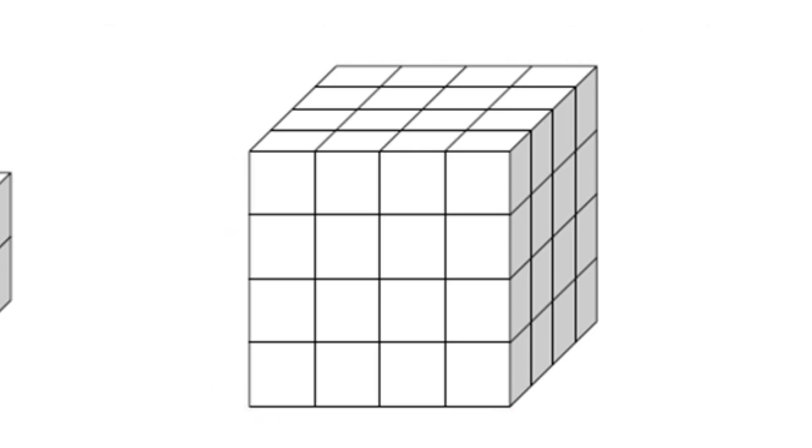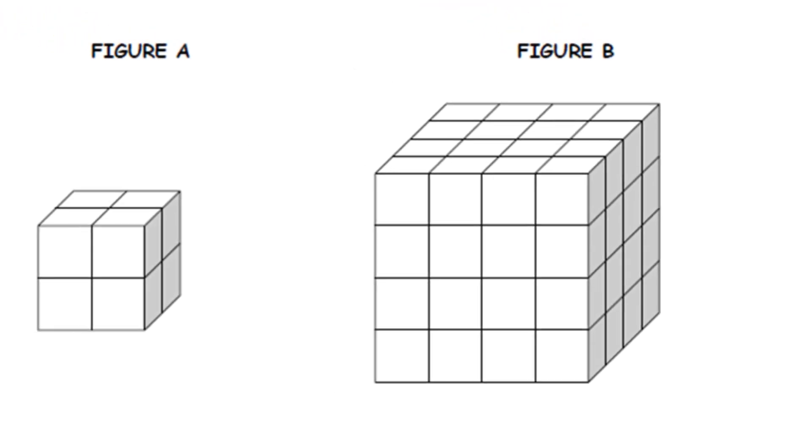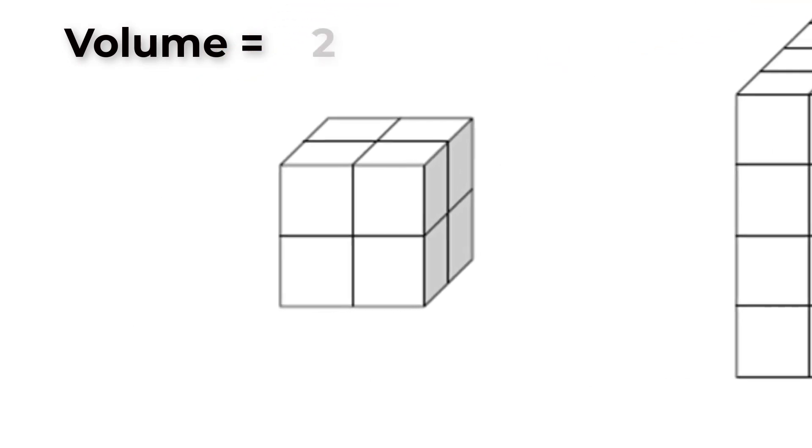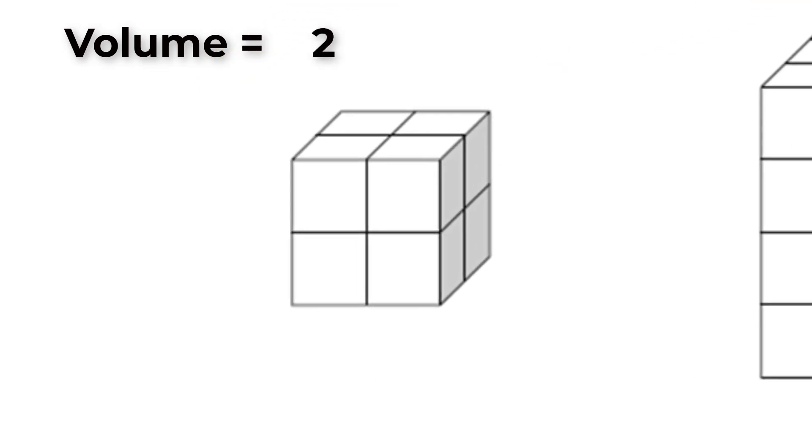Let's compare these values. When we formulate the volume of these cubes, for Figure A, the volume of a cube is calculated by multiplying the height, which is two blocks, times the width, which is two blocks, times the length, which is two blocks, giving us a volume of eight.